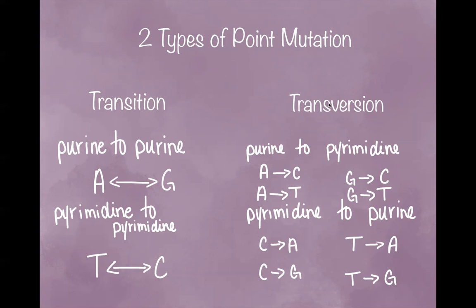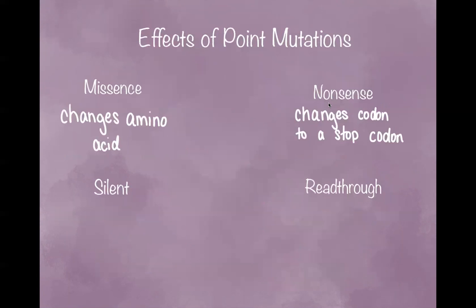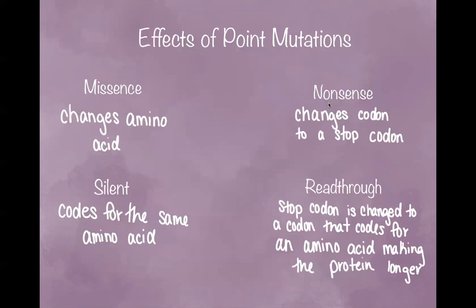Now let's look at the effects of point mutation. There is missense, nonsense, silent, and read-through. Missense is when a base change changes the amino acid within a sequence. Nonsense is when a codon changes to a stop codon. Silent is when a base codes for the same amino acid. And read-through is when a stop codon is changed to a codon that codes for an amino acid, making the protein longer. So now let's take a look at some examples.